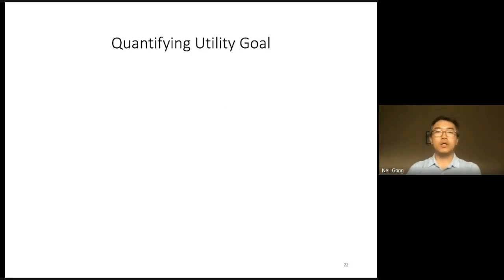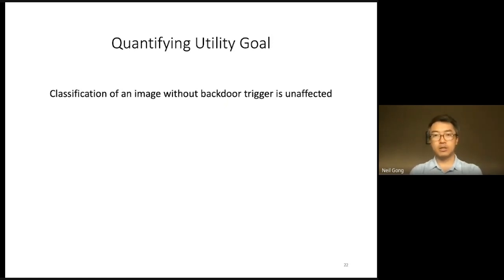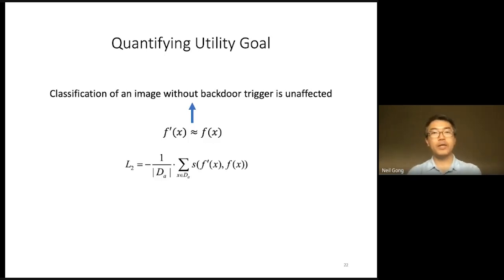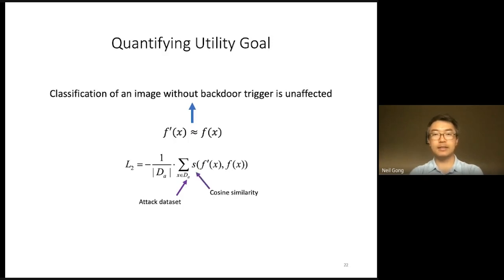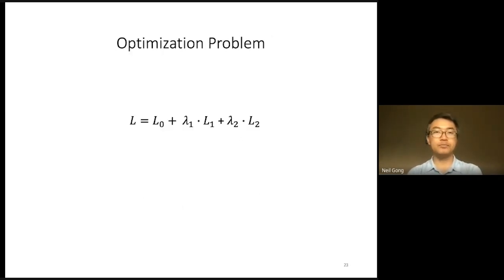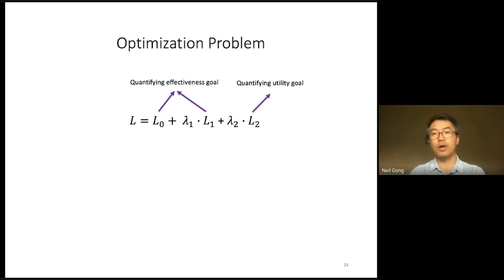Recall that the utility goal means the classification of an image without the backdoor trigger should not be affected by the backdoor attack. To achieve this goal, we want the backdoor encoder F' and the clean encoder F to produce similar feature vectors for any image x without the backdoor trigger. Formally, we use loss term L2 to quantify the utility goal. Finally, we have the total loss L, where L0 and L1 quantify the effectiveness goal while L2 quantifies the utility goal.